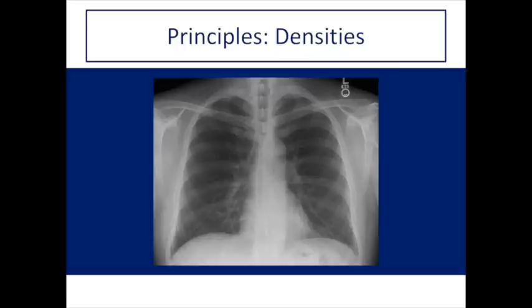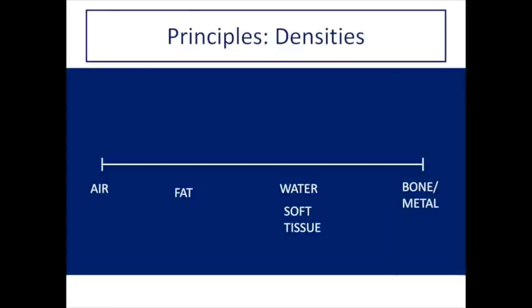Now let's move on to the actual imaging. Before we talk about abdominal x-ray, it's important to know what we're looking at. An x-ray is created by shining an x-ray beam through something and detecting it on the other side — in this case, someone's chest. Tissues of lower density appear darker, and tissues of higher density appear brighter. You only need to know a few basic radiographic densities: air is very low density and shows up darkest; bone and metal are very dense and show up very bright. In between, we have fat, and then water and soft tissue — fat is less dense than water and soft tissue.